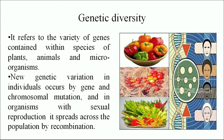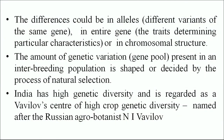We will discuss each type of diversity in detail. Genetic diversity refers to the variety of genes contained within species of plants, animals and microorganisms. New genetic variation in individuals occurs by gene and chromosomal mutation, and in organisms with sexual reproduction it spreads across the population by recombination. The differences could be in alleles, in the entire gene, or in the chromosomal structure. The amount of genetic variation present in an interbreeding population is shaped by the process of natural selection.